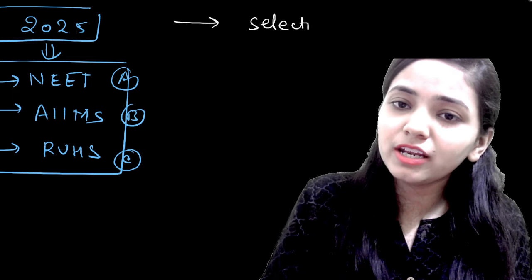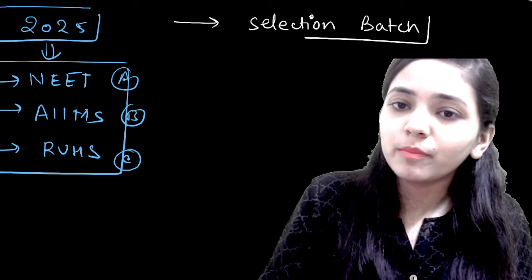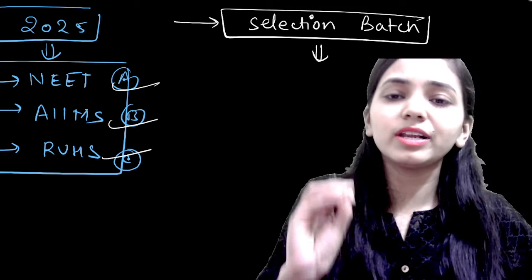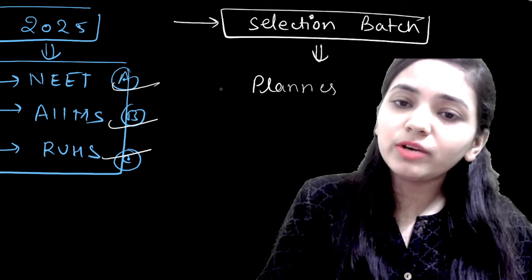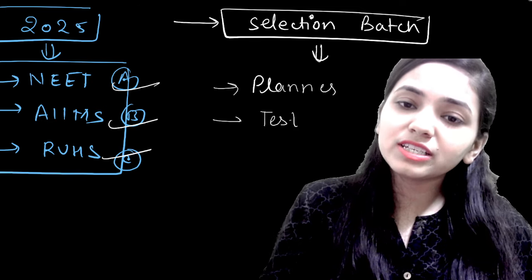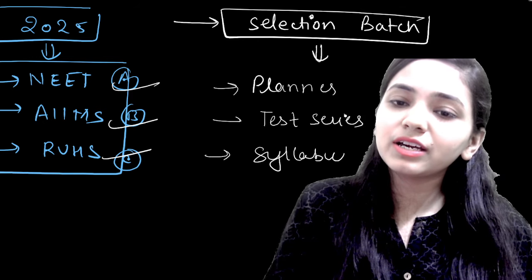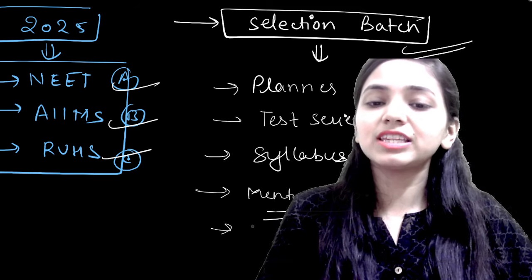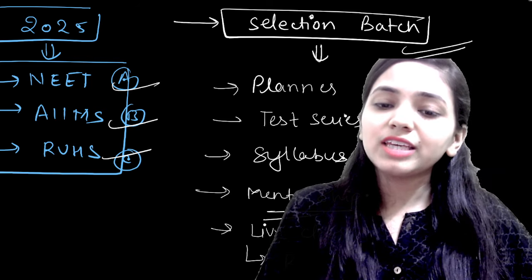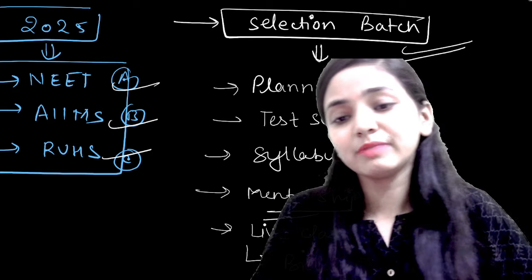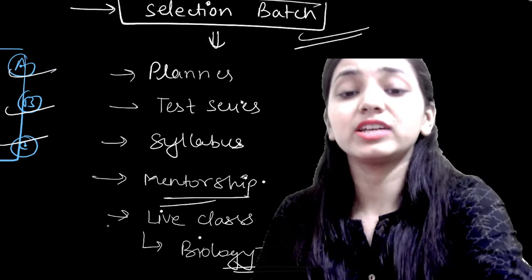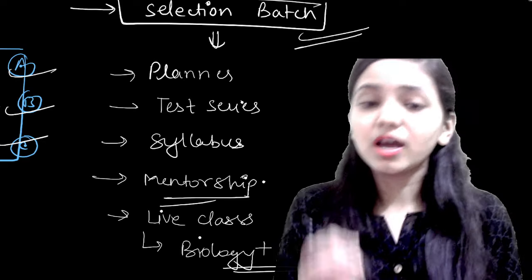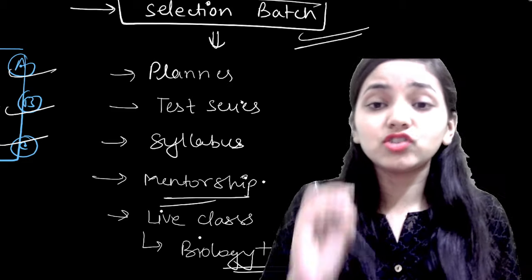If you have not started for 2025, I have already launched our selection batch. In this selection batch, we are providing an all-rounder batch for three entrance exams. You will get a proper planner, day-to-day schedule, test series for three entrance exams, syllabus completion on time, and proper mentorship. You will get live classes, just biology classes, and for AIIMS we will also provide GK classes. For physics and chemistry, we will suggest the best teachers. You will get test series, modules, and PYQs.